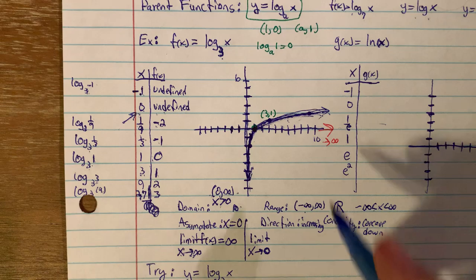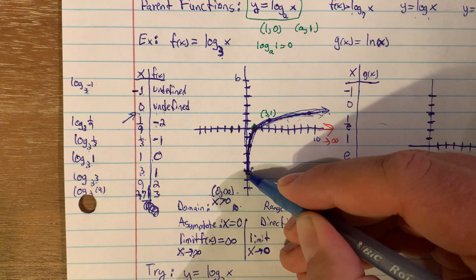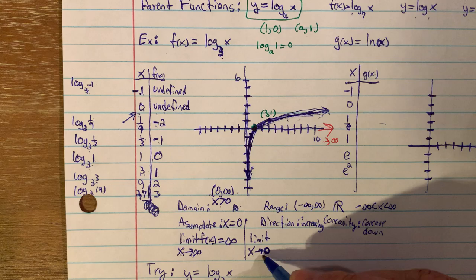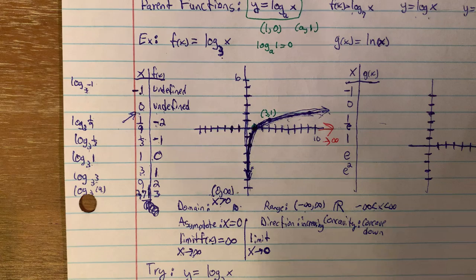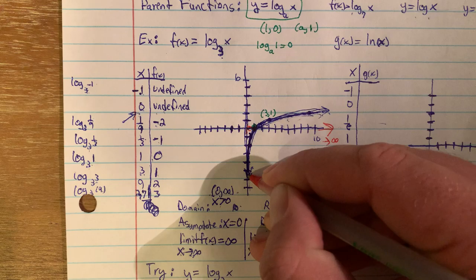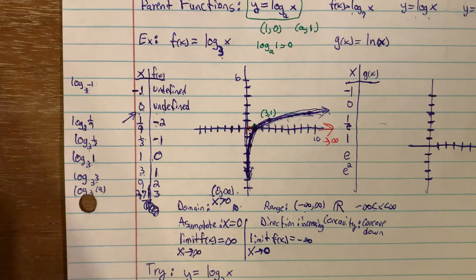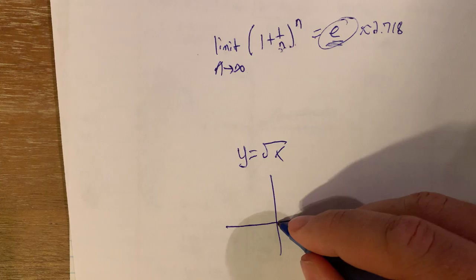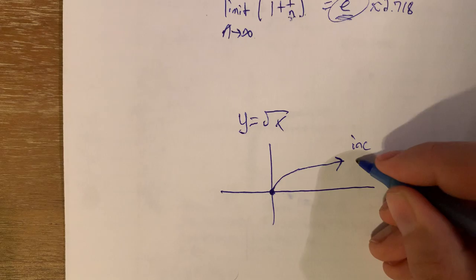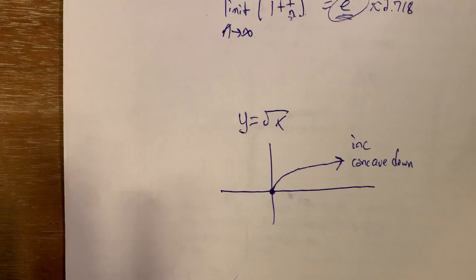We can also use limits where the graph breaks, like at an asymptote. At x = 0 the function is undefined, but we can still talk about what happens as we get close to x = 0. The limit as x goes toward 0 of f(x): as x gets closer and closer to 0, there's no limiting y value — the y values go down to negative infinity.